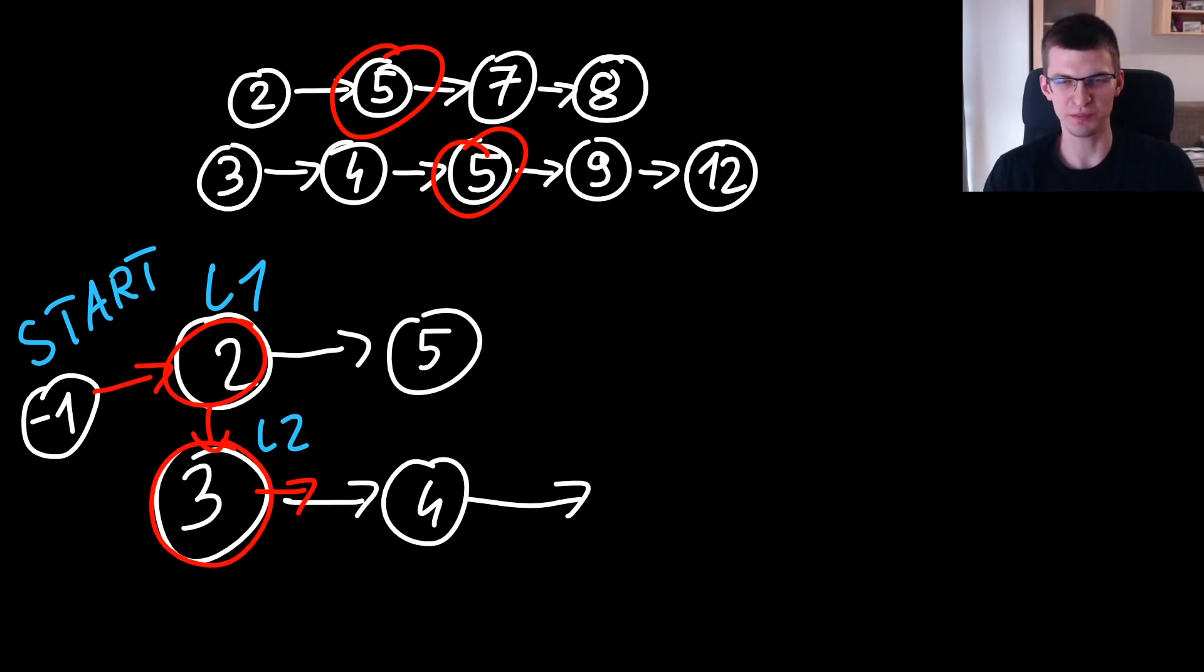So instead of returning start, I will return next of start. Start points to the beginning of real combined list and I should return that. Remember always consider creating fake vertex.